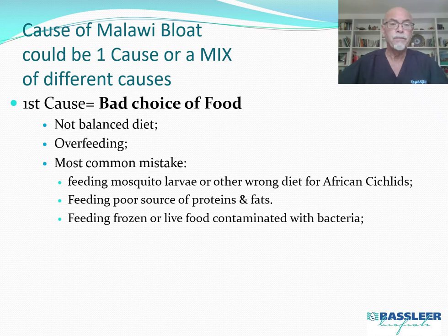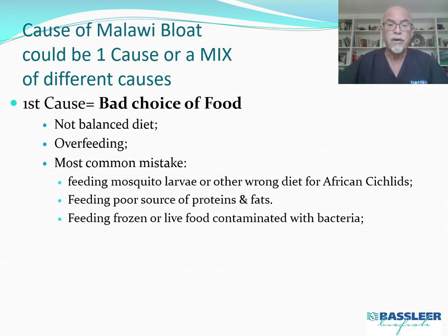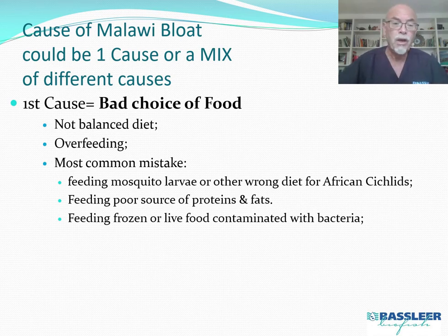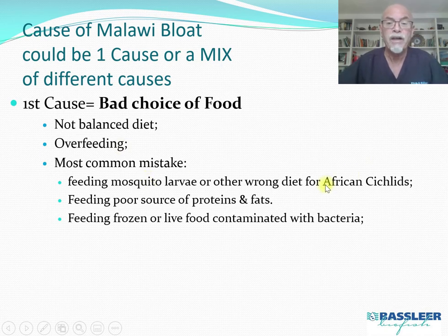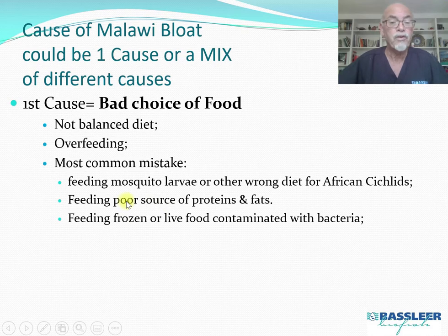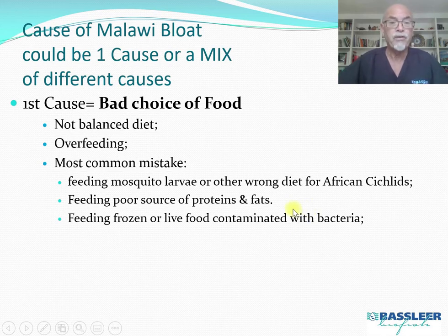First of all, a not balanced diet and overfeeding — giving too much food — is a common error which can make the fish really sick. Fish see you and the food can, and they go for food because they think they might have nothing tomorrow. This is a survival instinct, so be aware that overfeeding is a common risk. A common mistake is feeding mosquito larvae or other wrong diets for African cichlids. You have to ensure a good source of proteins and fats. Also, feeding frozen or live food can introduce bacteria contaminating the gut flora and increasing the risk of Malawi bloat.